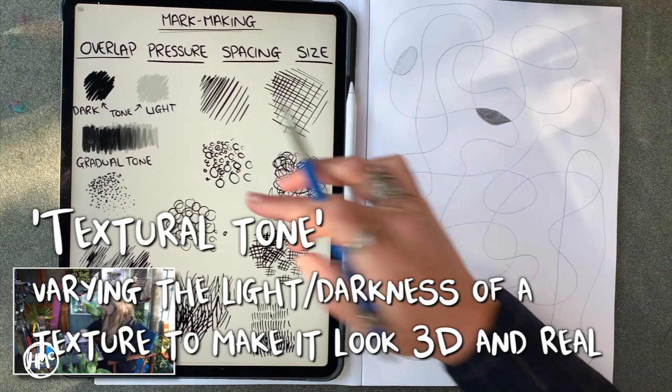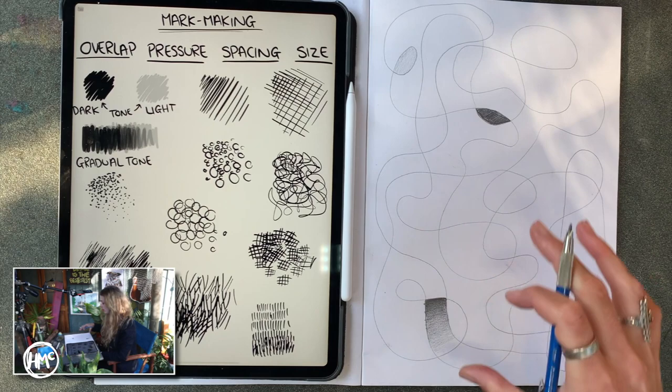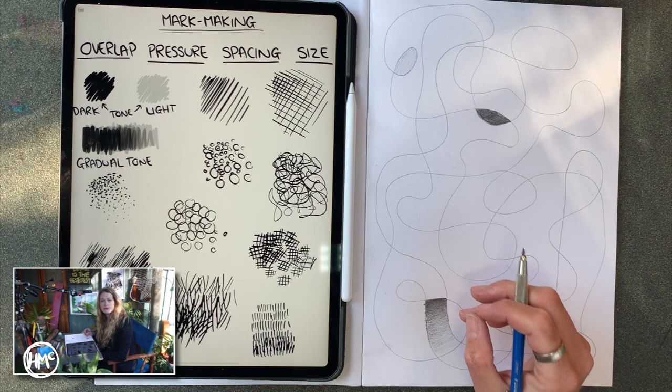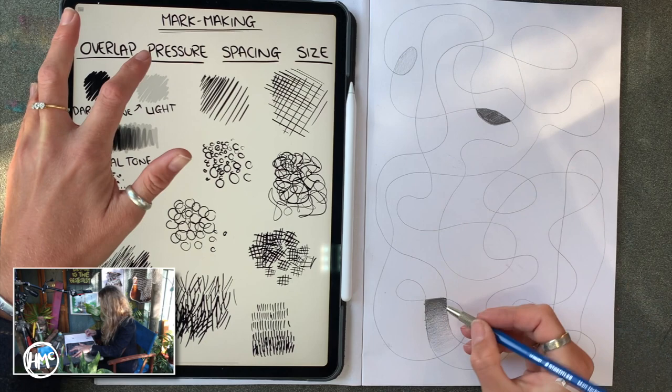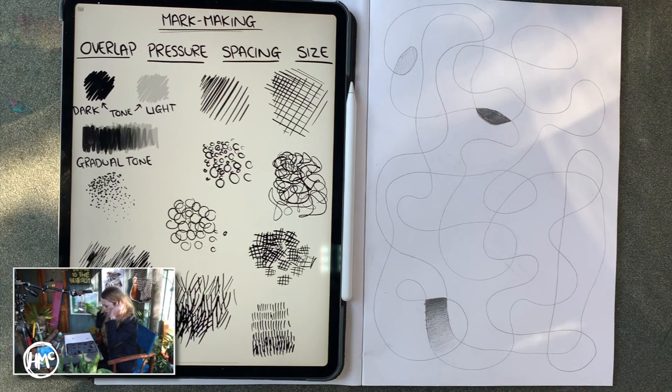Textural tone, like I said before, is where we blend our textures with that gradual tone to create realistic 3D textures that we feel we can reach and touch. To do that though, to create realistic textural tone, we need to vary the following things. The first one is overlapping, and that's what I just explained there, where we overlap repeatedly to get it darker. The second one is varying the pressure. We press harder to get it darker and lighter to get it lighter.